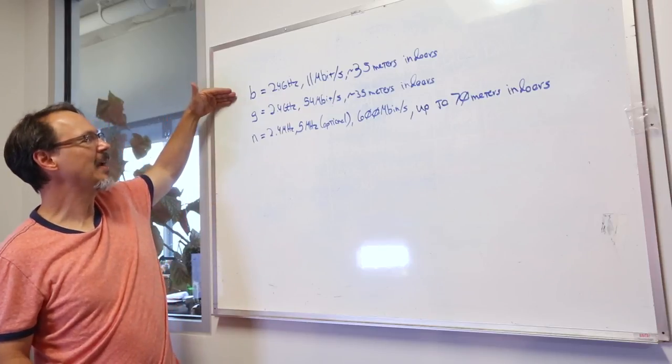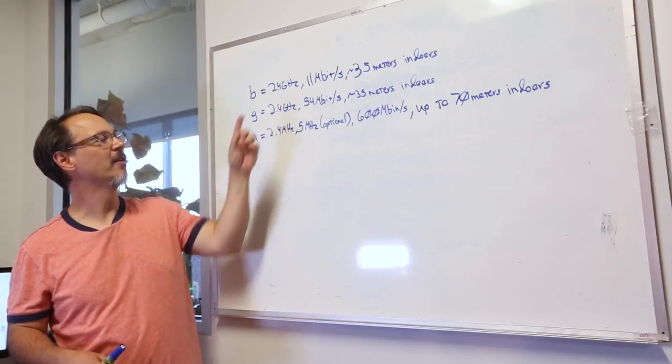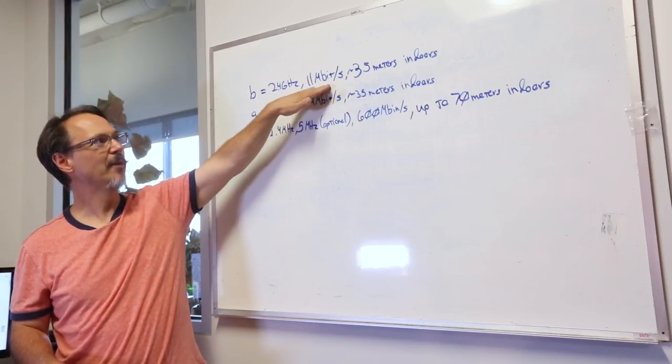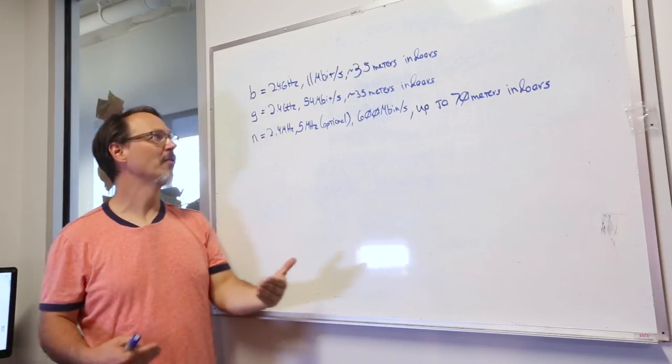So 802.11 B runs again, and I covered some of this earlier, but runs at 2.4 gigahertz up to 11 megabit per second, gets you about 35 meters of distance indoors.